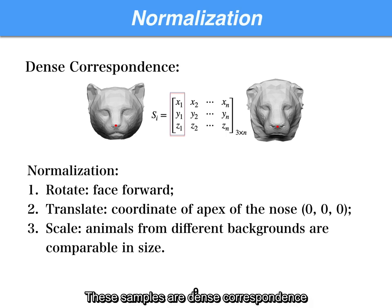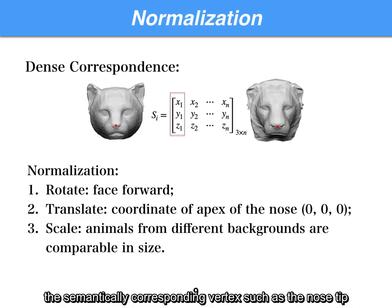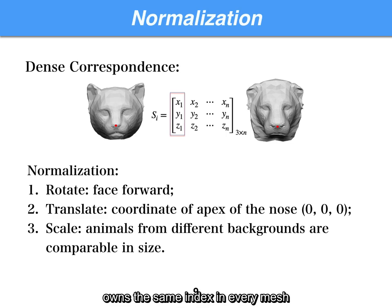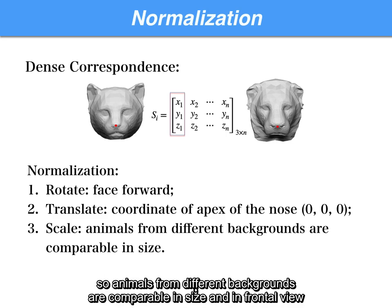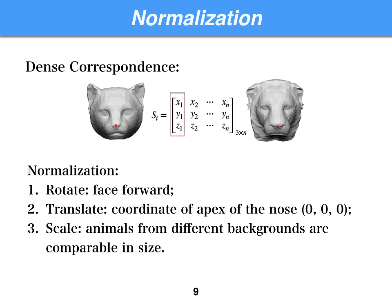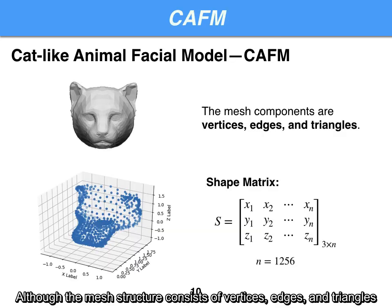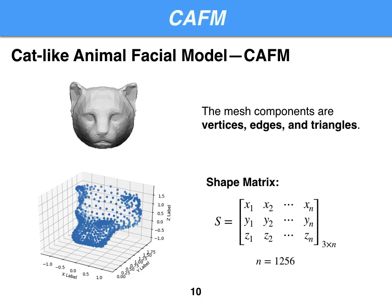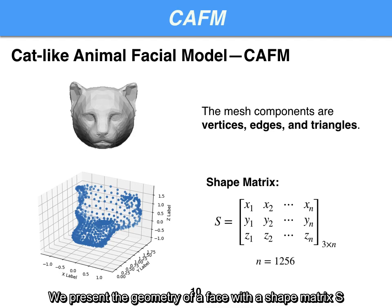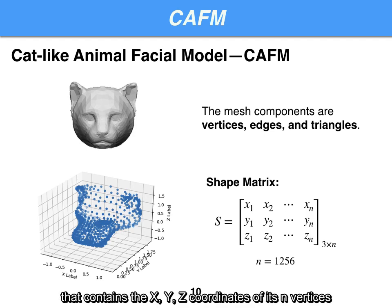These samples are in dense correspondence — semantically corresponding vertices, such as the nose tip, own the same index in every mesh. After normalization, we estimate a scaling factor so animals from different backgrounds are comparable in size and in frontal view. Although the mesh structure consists of vertices, edges, and triangles, we represent the geometry of a face with a shape matrix S that contains the x, y, z coordinates of its n vertices.